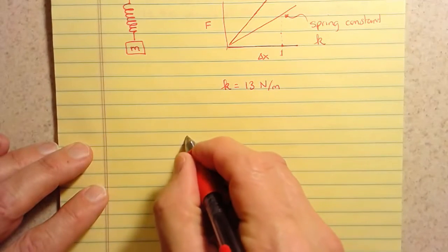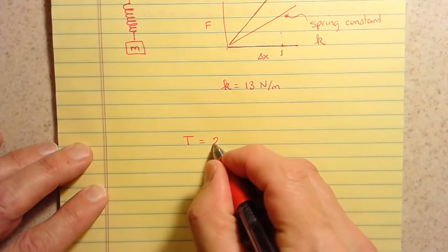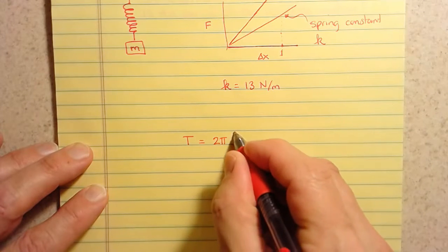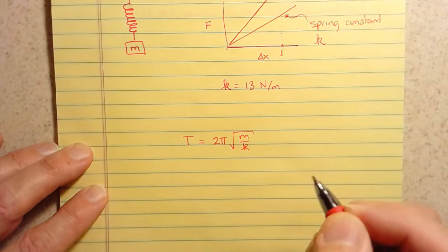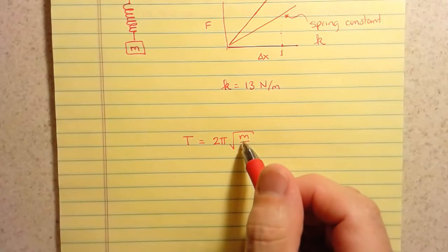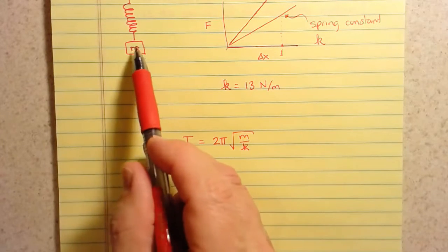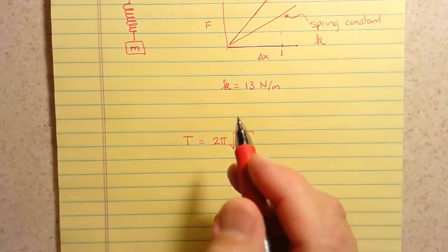So the way it works out, and you guys had a hint of this in lab, the period is equal to 2 pi times the square root of the mass divided by the spring constant. So you guys kind of found this in lab. You found that as you made the mass bigger and bigger and bigger, you hung heavier weights on here, the time it took to repeat its cycle got bigger and bigger.